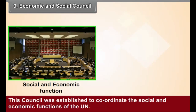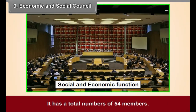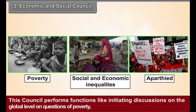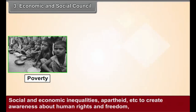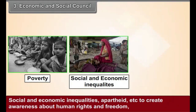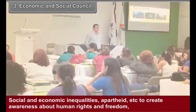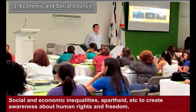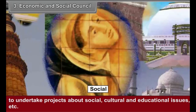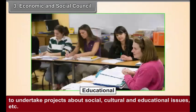Economic and Social Council — Structure: This Council was established to coordinate the social and economic functions of the UN. It has a total number of 54 members. Functions: This Council performs functions like initiating discussions on the global level on questions of poverty, social and economic inequalities, apartheid, etc. It also works to create awareness about human rights and freedom, and to undertake projects about social, cultural and educational issues.